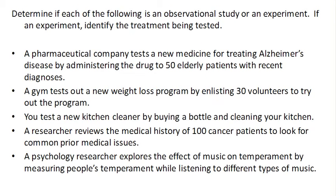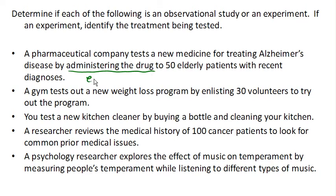So let's look at some examples. In each of these situations, let's see if it is an experiment or an observational study, and if it's an experiment, let's identify the treatment. Suppose a company tests a new medicine for treating Alzheimer's by administering the drug to 50 elderly patients. We're actually administering the drug, so we are doing a treatment — this is indeed an experiment, and the treatment is the drug that we're testing.